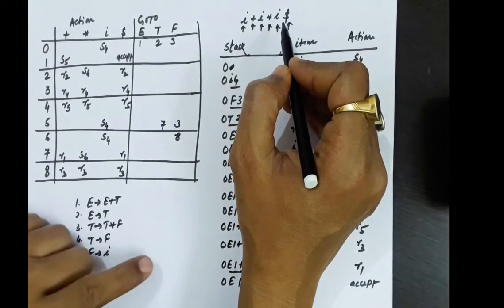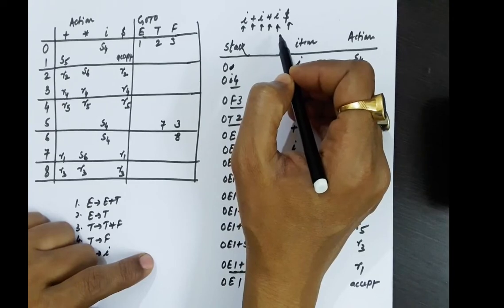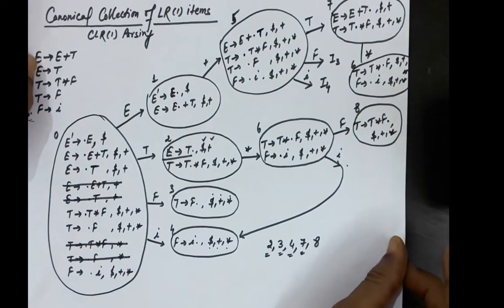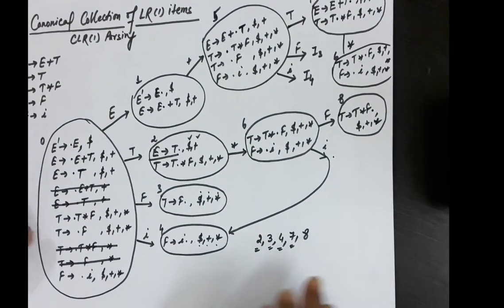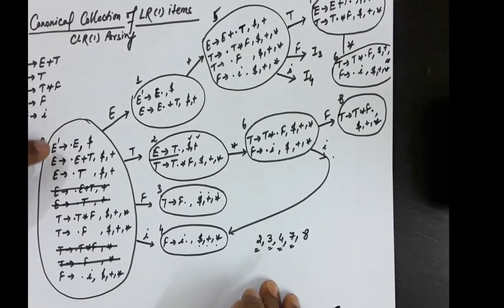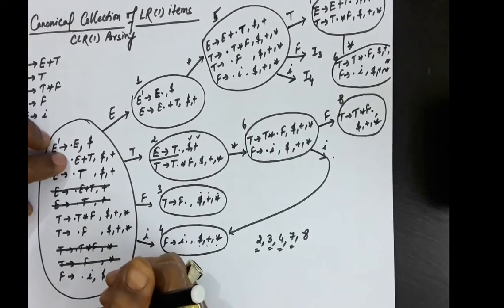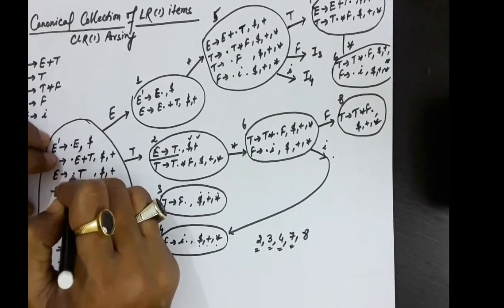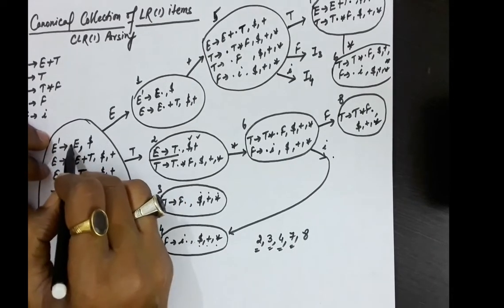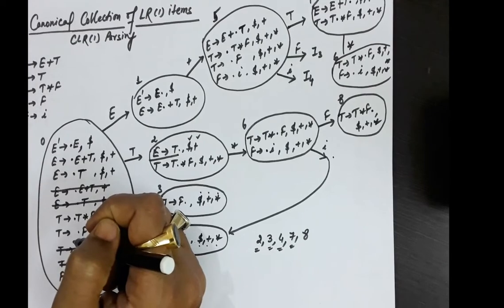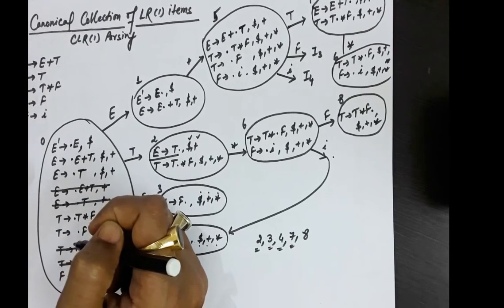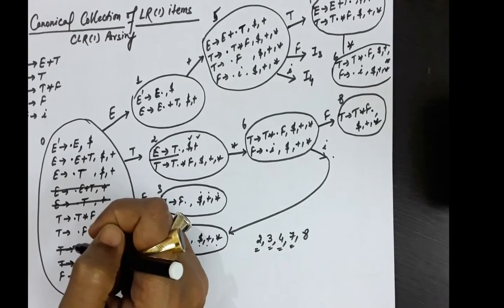The important thing is to understand how the canonical collection of LR1 items is written. With the same symbol, different lookaheads may appear, so you just combine those lookaheads and it becomes easier. For LR0 items, from one symbol productions are written only once, but in LR1, with one symbol the production can be written more than once if the lookaheads are different.